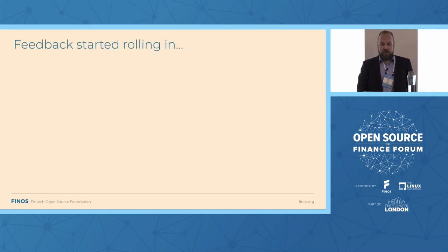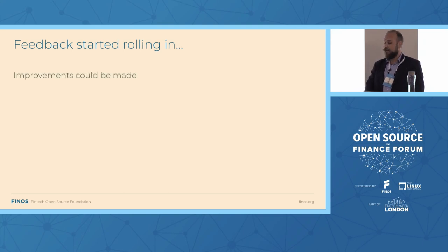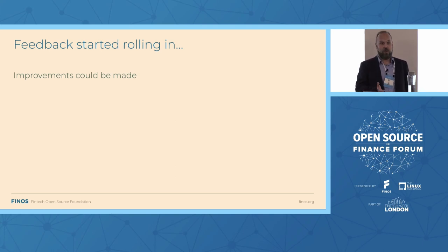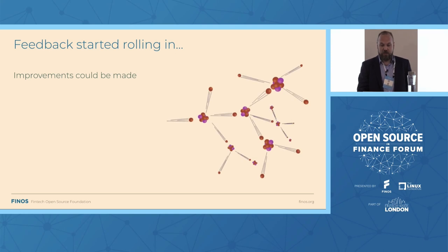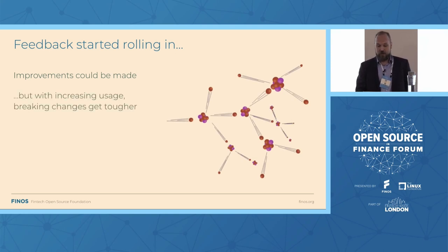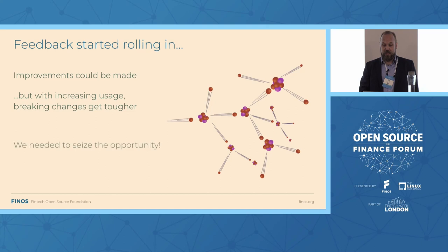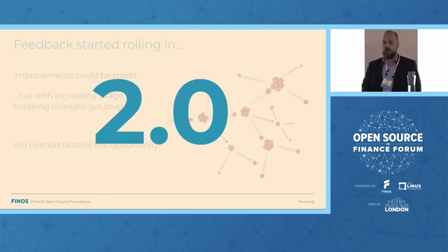All this exciting usage founded on FDC3's strengths revealed a few places where the standard could go further, could be better. And with it rapidly approaching that critical mass where everybody's going to use it, making breaking changes is going to get harder and harder for us to do. Hence, we needed to seize the opportunity to change things before it got too difficult, which resulted in a 2.0 this year.